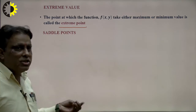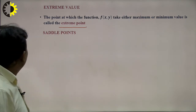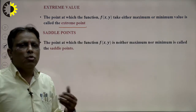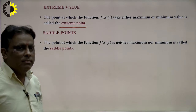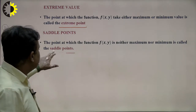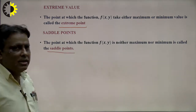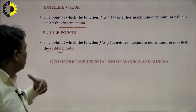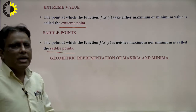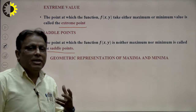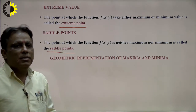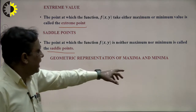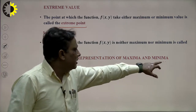The point at which a function takes either a maximum or minimum value is called an extreme point. Students should study and remember this carefully. A point at which the function is neither maxima nor minima is known as a saddle point. Now, the geometrical representation of maxima and minima: I will draw a graph and explain how to interpret it geometrically.